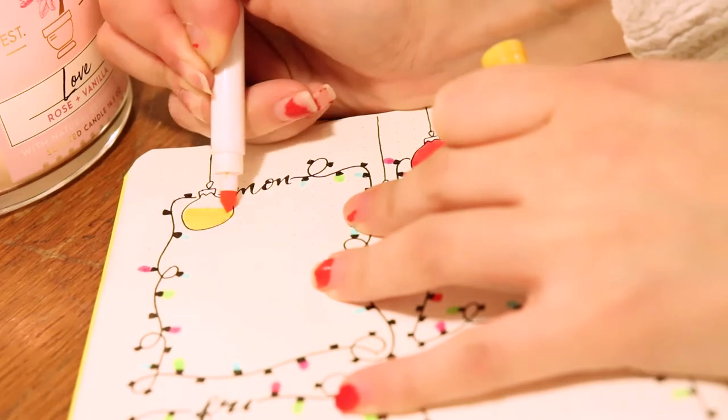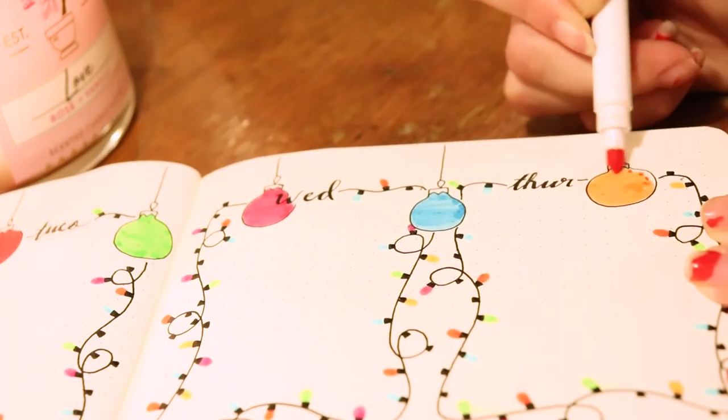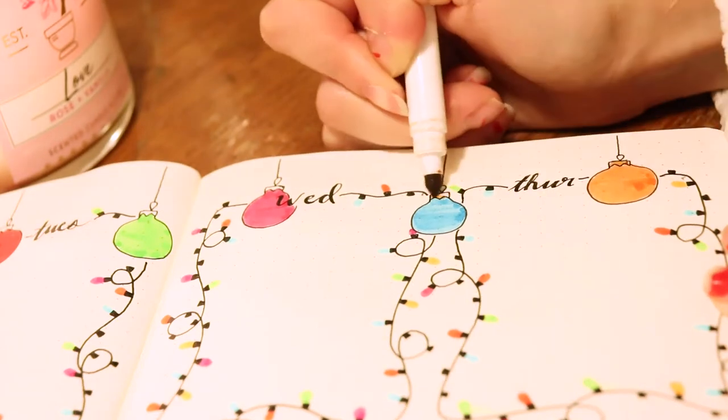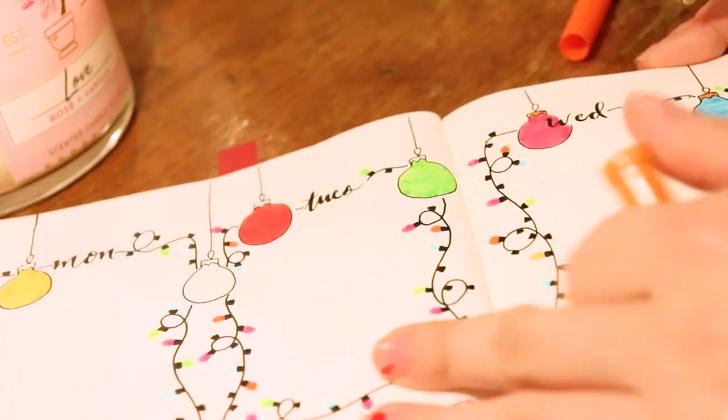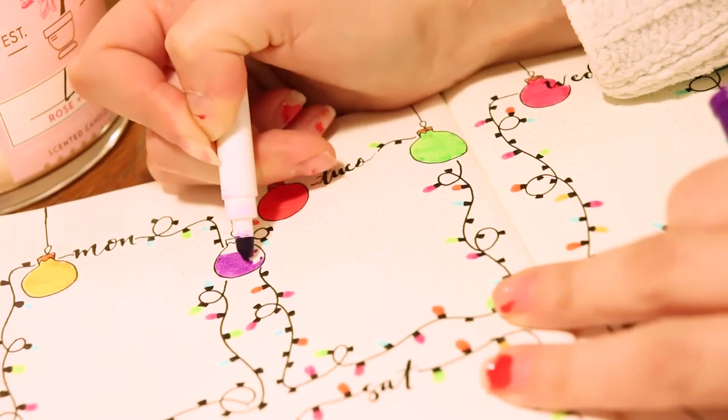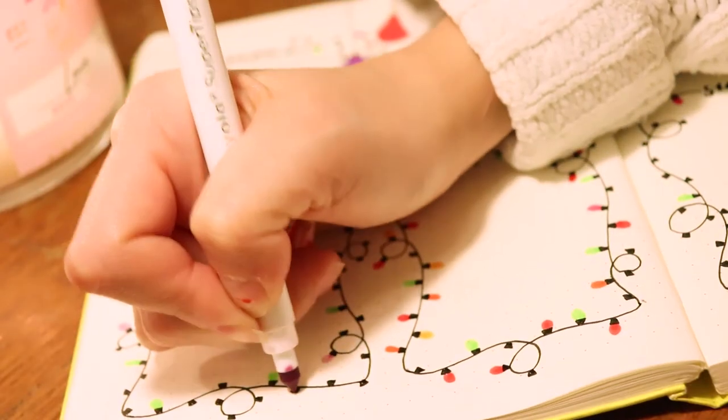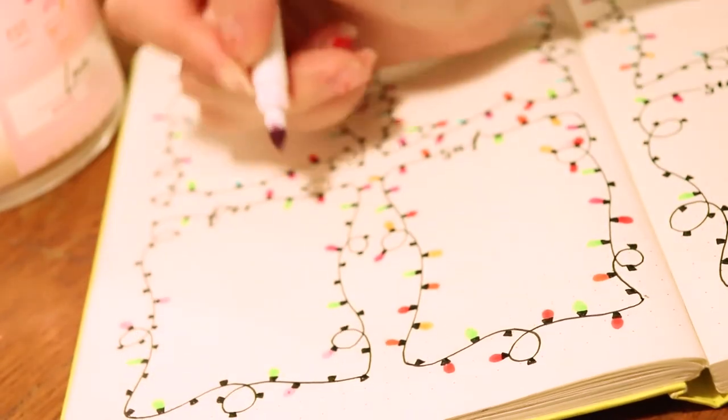I think it would be really beautiful if you did make them have different designs, kind of like Amanda Rach Lee or anyone else on YouTube. Literally there's been so many incredible December bullet journal spreads, which is why I love the bullet journal community here on YouTube. I'm coloring the little top parts of the ornaments with a brown color.